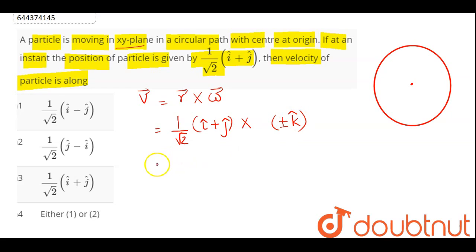Now, here this on cross product gives us plus minus 1 by root 2. Now, i cross k gives us minus of j cap. And j cross k gives us plus of i cap.